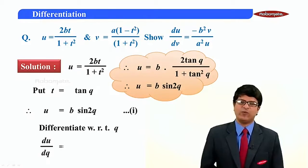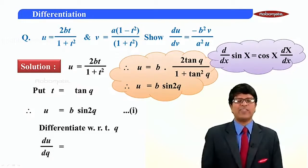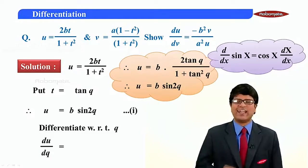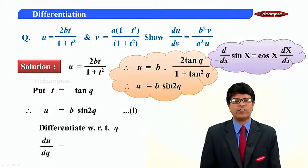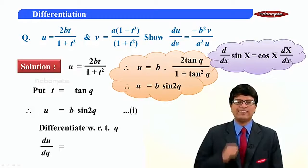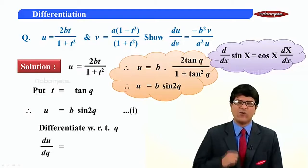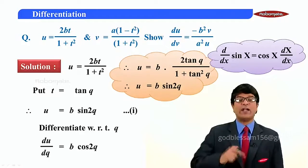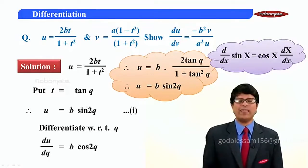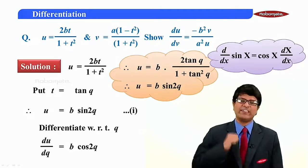Let us differentiate with respect to theta. du by d theta: b is a constant. sin 2 theta — is it a standard or a composite? I say it as composite, to which standard form sin x. What is the derivative of sin x? Cos x. So here it will be cos 2 theta. What is replacing x? 2 theta. Differentiate it: 2. So du by d theta equals 2b cos 2 theta.